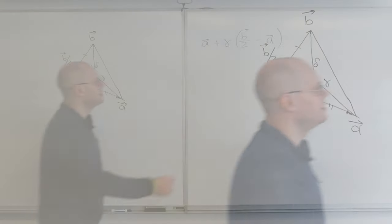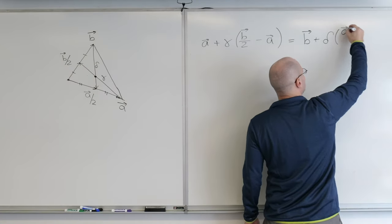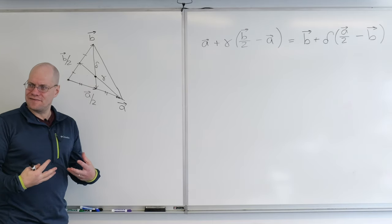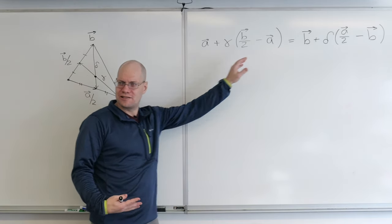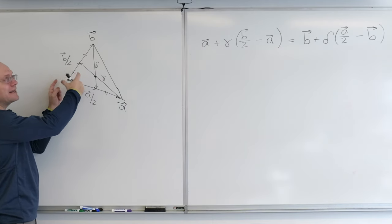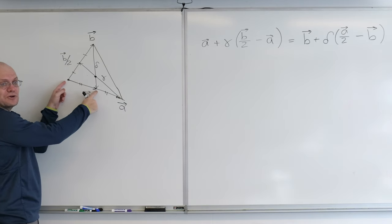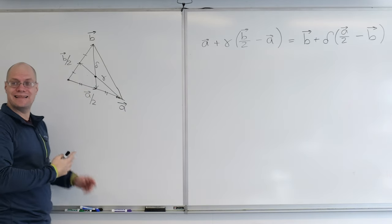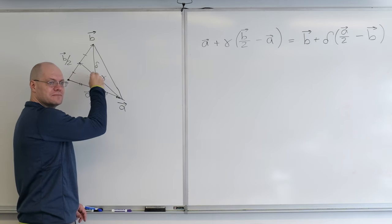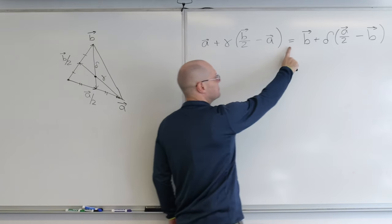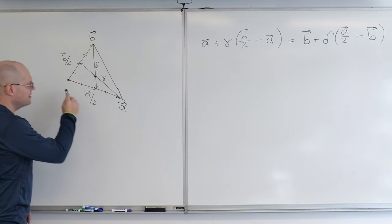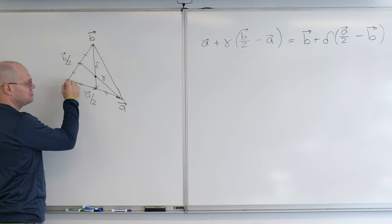But what I've captured here is everything that's given in algebraic terms. So what are the two things that are given? That these two lines are medians, and I captured that by saying this is B over 2 and this is A over 2. And that they intersect. What does it mean that they intersect? That means they have a common point. That's where the equal sign comes from. This is intersection, it means we arrive at the same point.